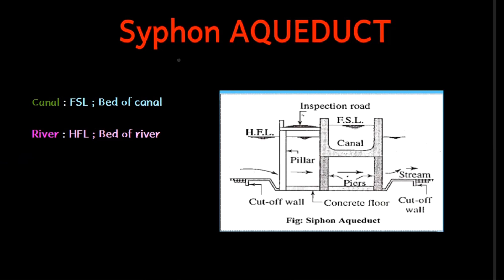This is the Aqueduct. The second type is the Siphon Aqueduct. In this case, there is a canal passing below the river level. The small difference is that in a Siphon Aqueduct, the canal bed is below the HFL of the river, and the FSL of the canal is also below the HFL of the river.